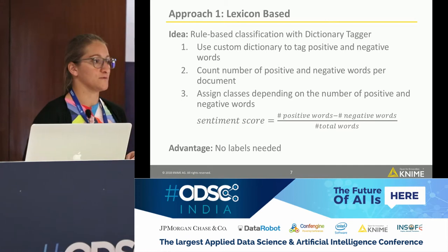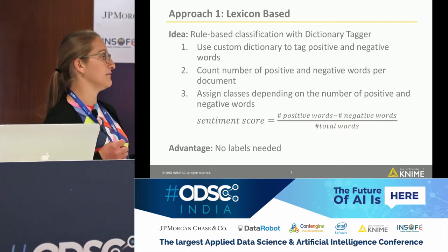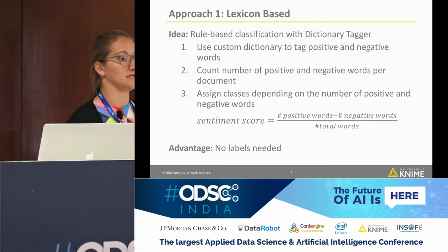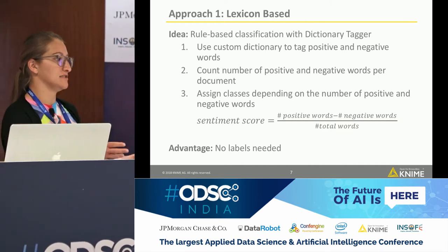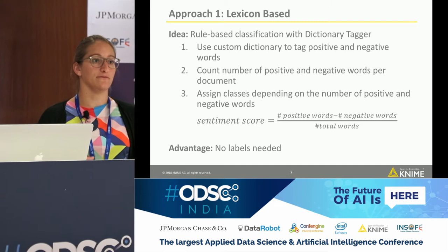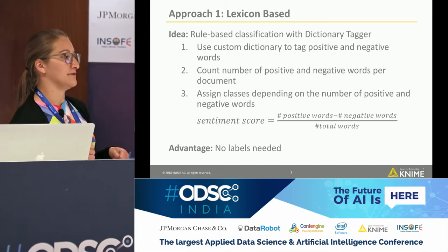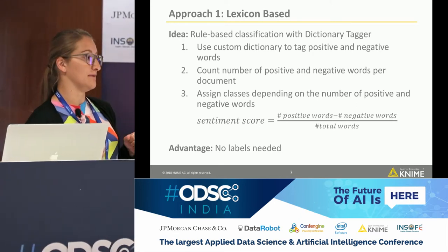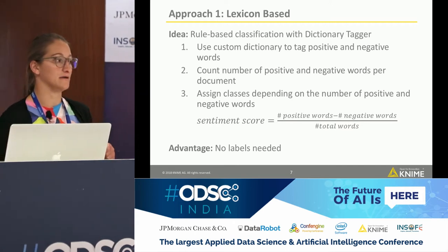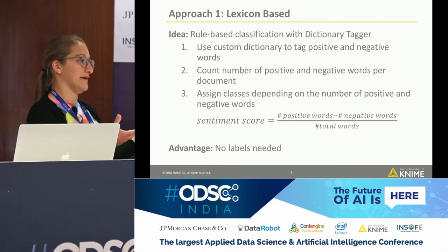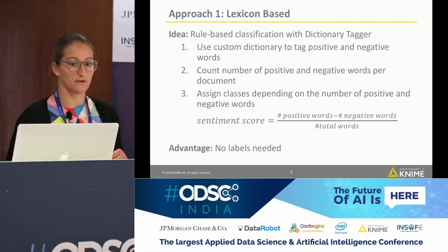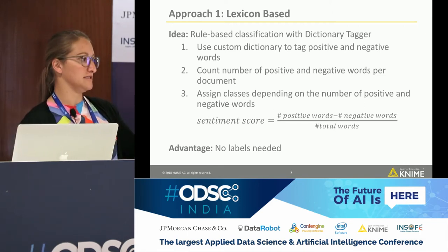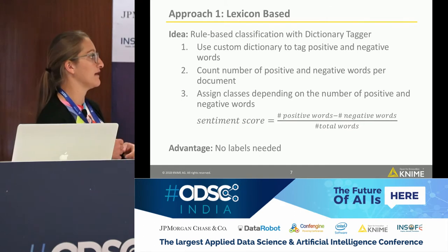The lexicon-based approach relies on dictionaries. You have dictionaries for each language, normally published by universities, with only positive words in one and only negative words in another. The idea is that you go through your documents and count how many positive words and how many negative words each document contains, then calculate a score. You use a dictionary tagger to tag all positive words with a positive tag and all negative words with a negative tag, then count them.